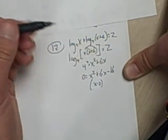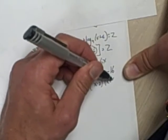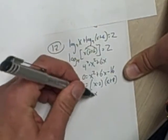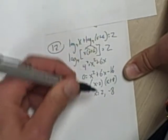That factors to x minus 2 times x plus 8. x would equal, according to this quadratic, 2 or negative 8.